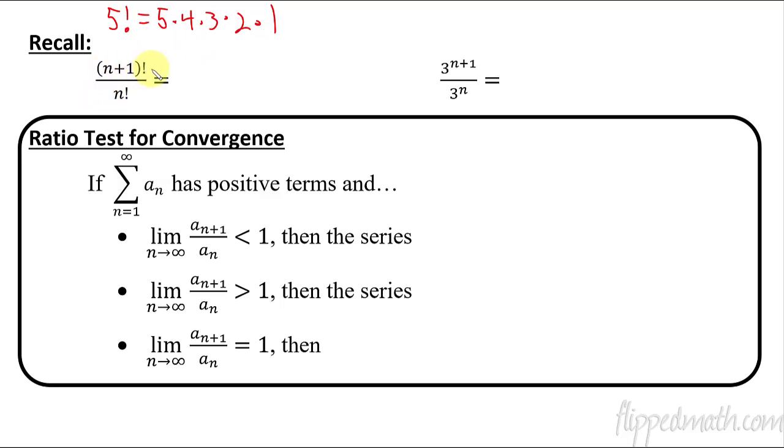So if you have (n+1) factorial, you can rewrite this as (n+1) times, and then you subtract 1, just like we did here, 5 minus 1, and then subtract 1 again, subtract 1 again. So (n+1) factorial is equivalent to (n+1) times n factorial.